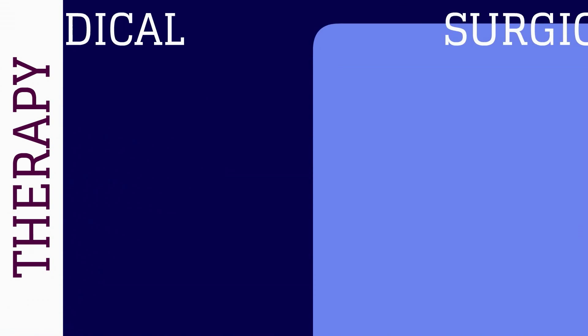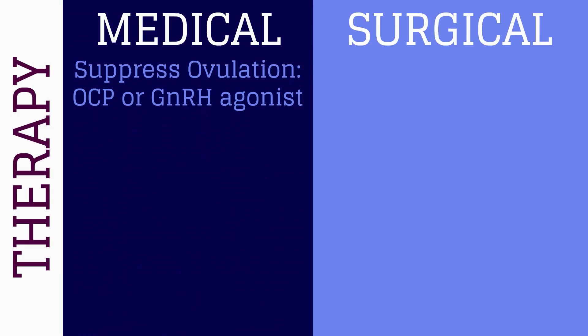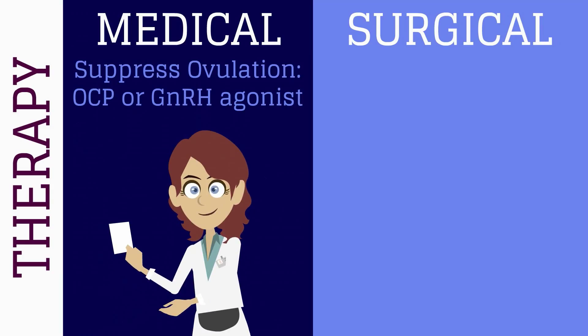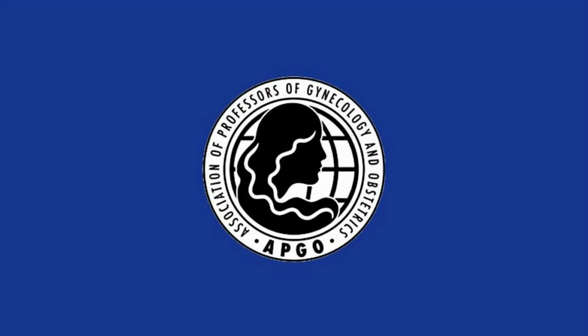Medical therapy options to consider include suppression of ovulation with oral contraception or a GnRH agonist, which may be useful. Also consider possible referral to GI for IBS or urology for interstitial cystitis. Surgical therapies such as hysterectomy should only be used after non-gynecological causes have been ruled out.